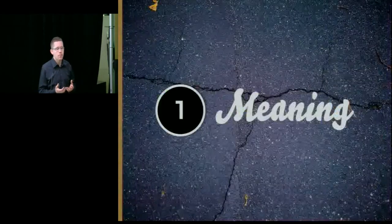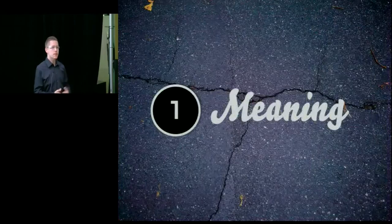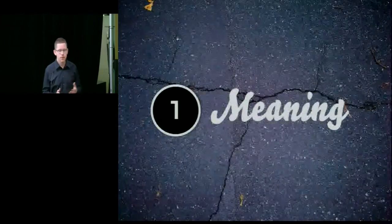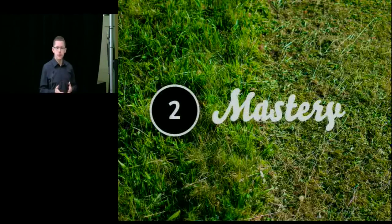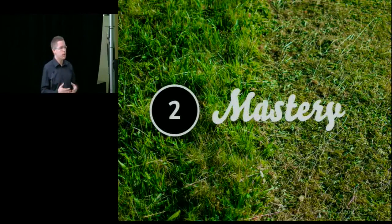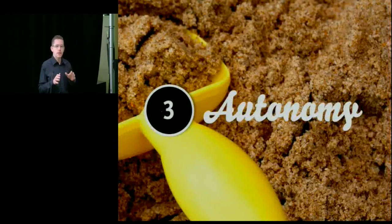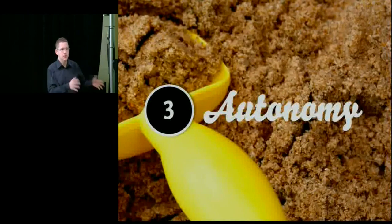The first one, going back to my first story, is meaning — how to make the experience and the activity connect to the user in a meaningful fashion, to his interests, his passions, his goals. The second thing, which connects to the story about the lawnmower, is mastery — how to craft an experience in such a way that the user gets the sense of progressing towards his or her goals, of achieving something, of feeling competent. And finally, that is the playground — autonomy: a sense of freedom, a sense of being left alone to your own mischief, a sense of being able to curiously explore opportunities without any kind of functional outcome attached to what you're doing.